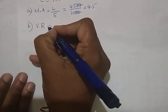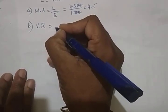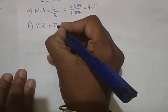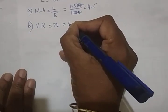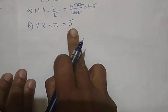D part velocity ratio. Now velocity ratio you can directly equate it to N, that is the number of pulleys. In this case, it will be 5. So velocity ratio will be 5.